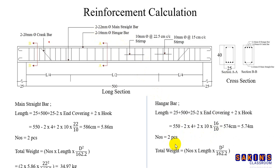Total weight: nose into length into 162.2. Diameter 16mm. So total bar. We have straight bar and hanger bar. Next crank bar.